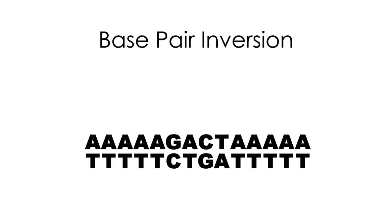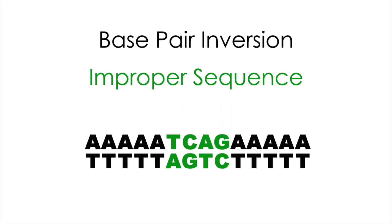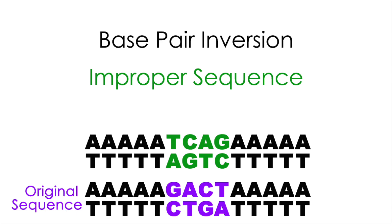Base pair inversion involves one or more base pairs that are removed from the DNA double helix, inverted, and then replaced into the DNA double helix, usually in the same location. This will not cause frameshift mutations, nor will it cause mismatched pairs; however, it will change the sequence within that gene.